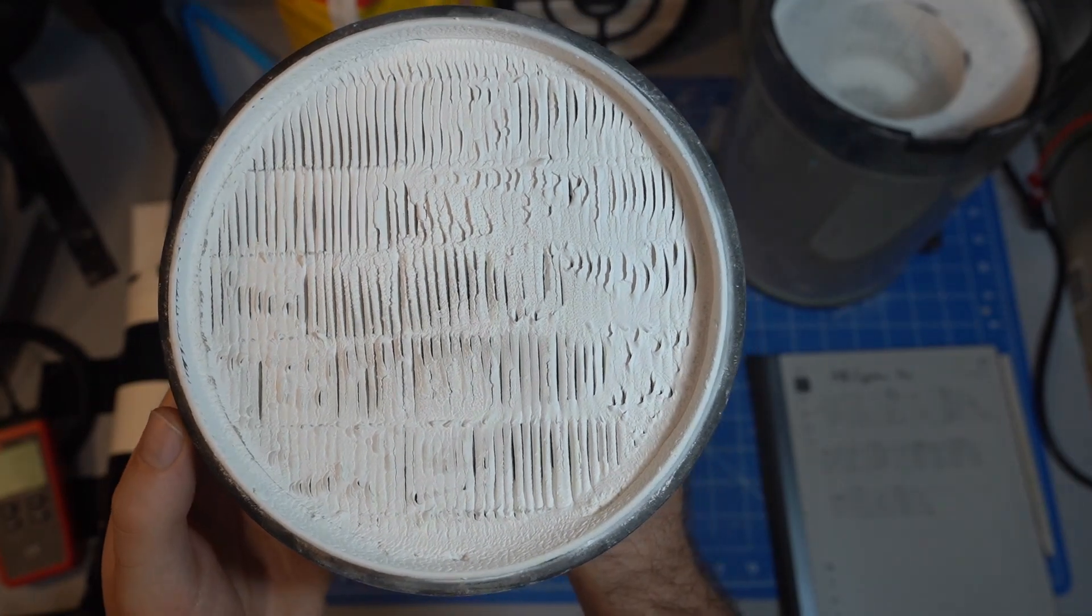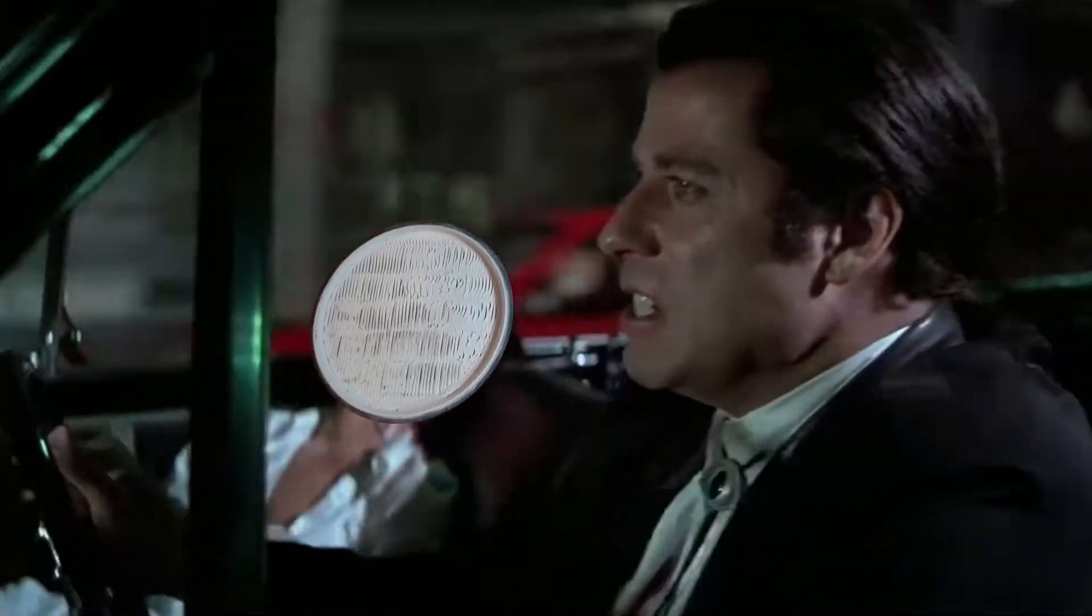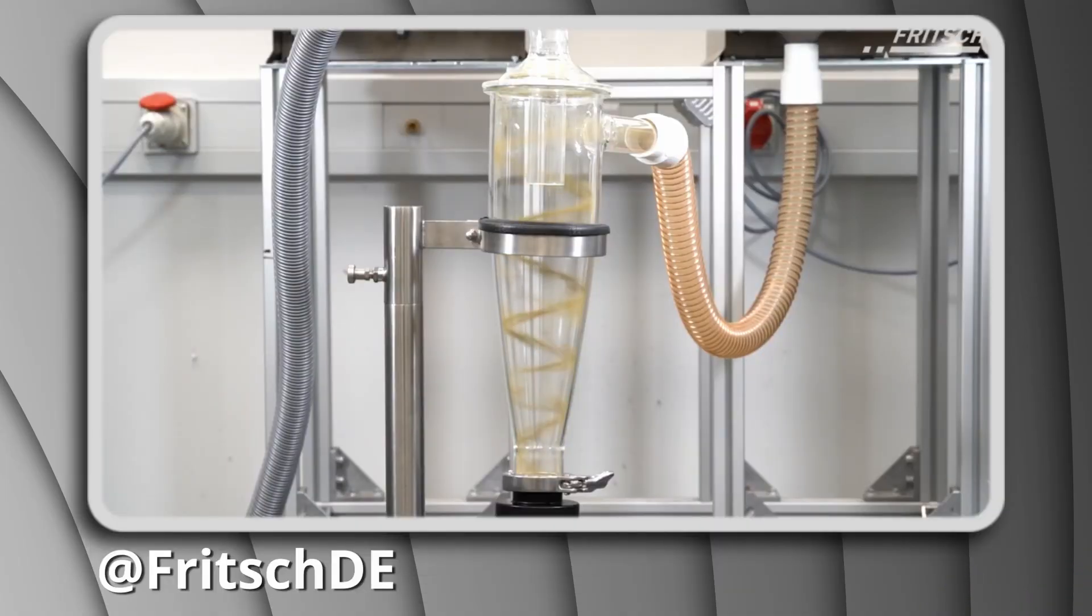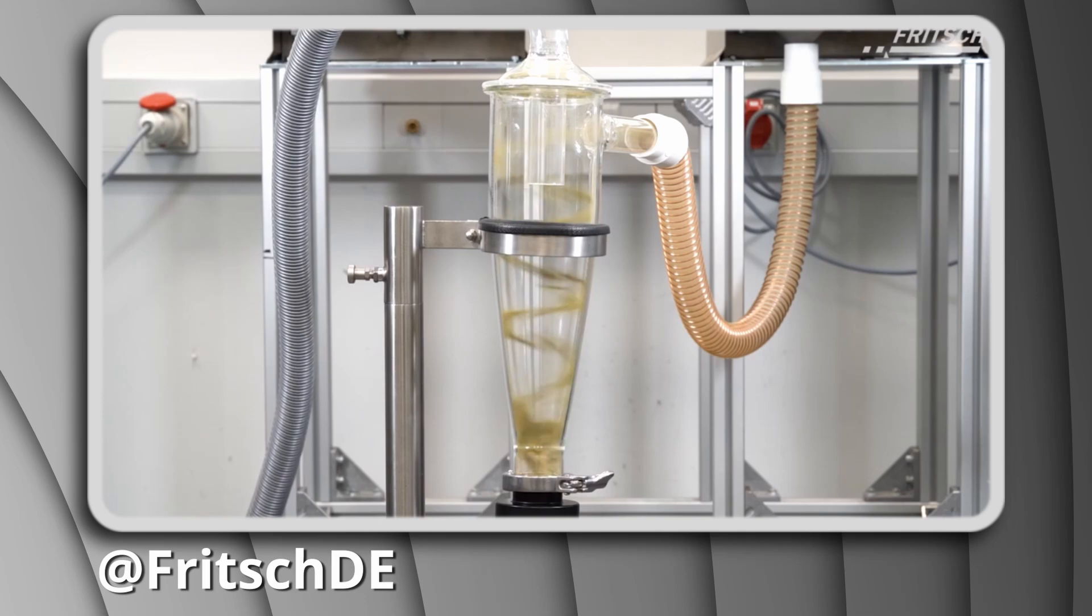The filter is absolutely chockers and cannot party anymore. The separation efficiency is fairly poor with 29% of the incoming dust making it to the filter. Industrial cyclones usually claim to let less than 1% through so there's a lot of room for improvement.